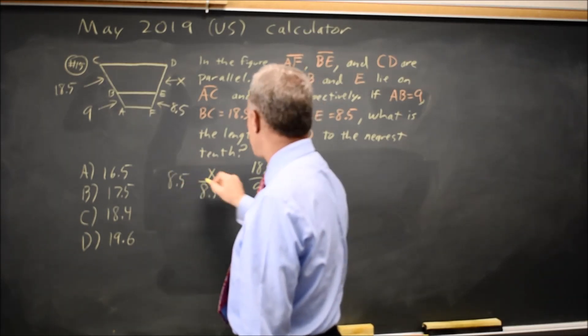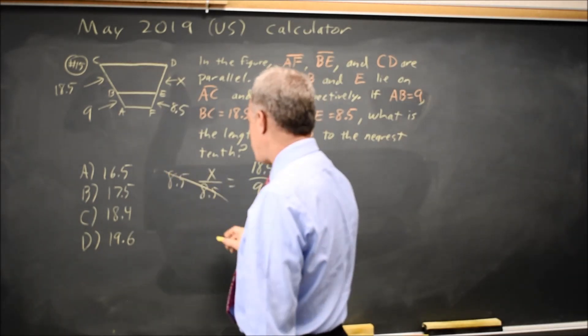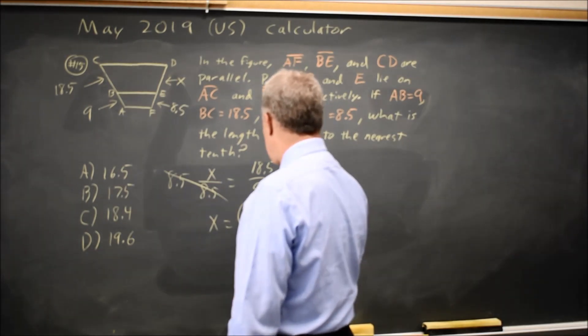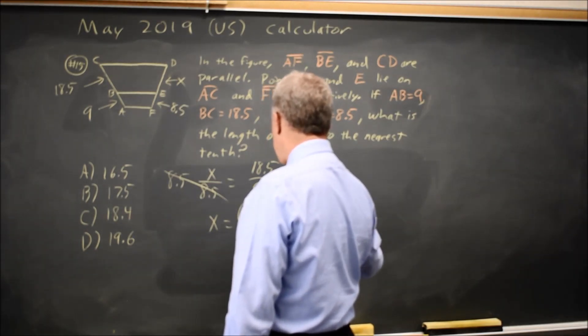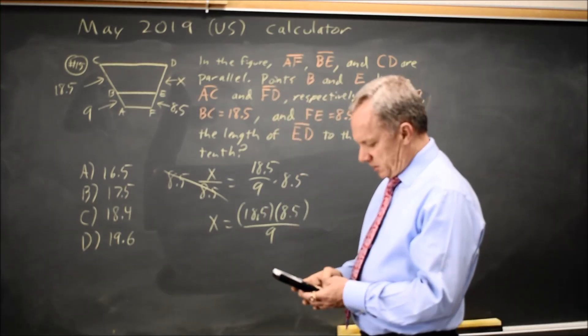If I multiply both sides by 8.5, that 8.5 over 8.5 is 1. That gives me X equals 18.5 times 8.5 divided by 9. Now, on my calculator,